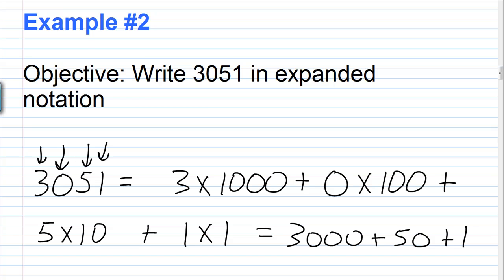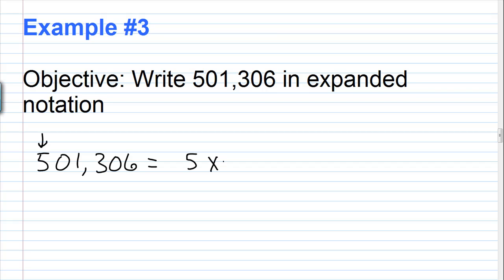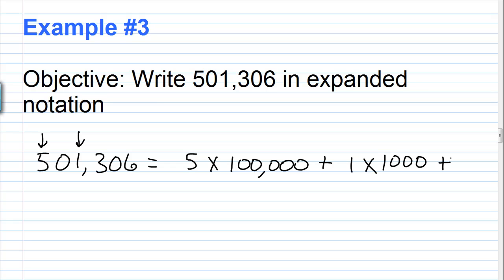Let's take a look at another example. For example number 3, our objective is to write 501,306 in expanded notation. Beginning with the leftmost digit, which is the 5 — the 5 is in the 100,000s place — we're going to multiply 5 times 100,000. Then we move to the digit to the right and that's a 0, so as shown in example 2, if you get a 0 you can just skip it. We move over to the 1, and the 1 is in the 1,000s place, so we're going to have 1 times 1,000. Next we have a 3 — that's in the 100s place, so 3 times 100.